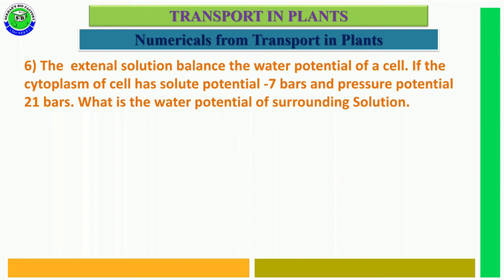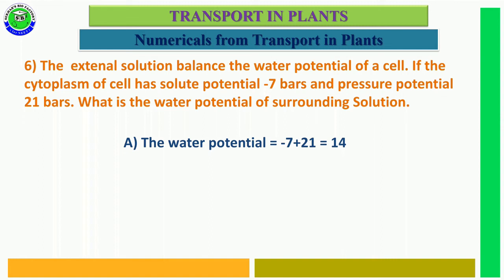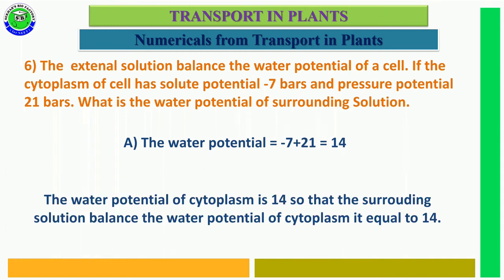Question number 6. The external solution balances the water potential of a cell whose cytoplasm has solute potential minus 7 bars and pressure potential 21 bars. What is the water potential of the surrounding solution? The external solution is isotonic. The water potential of the cell = minus 7 + 21 = 14 bars, so the surrounding solution also has water potential equal to 14 bars.